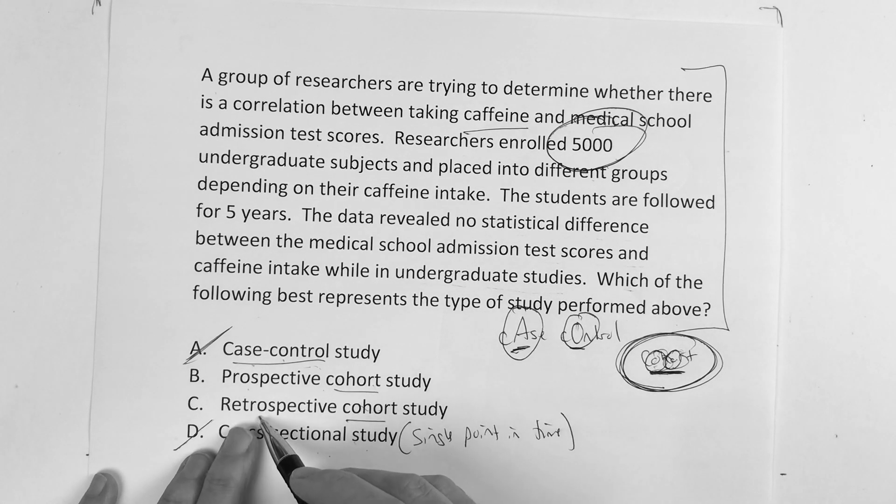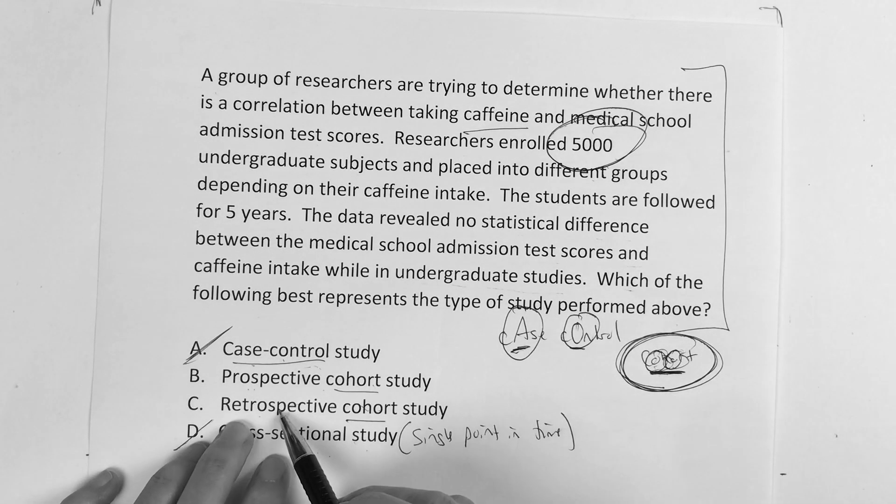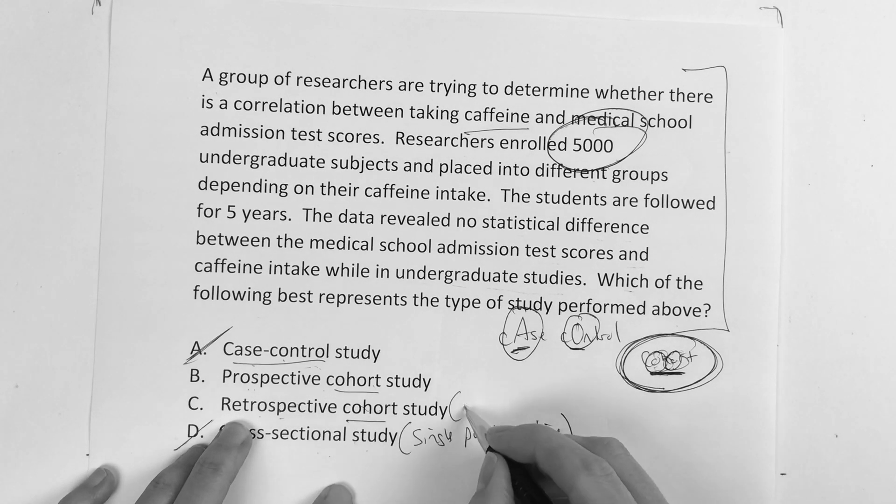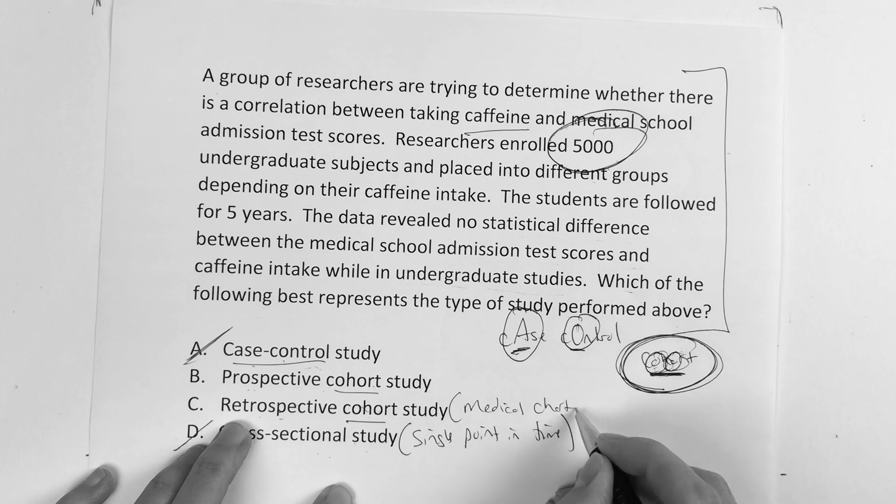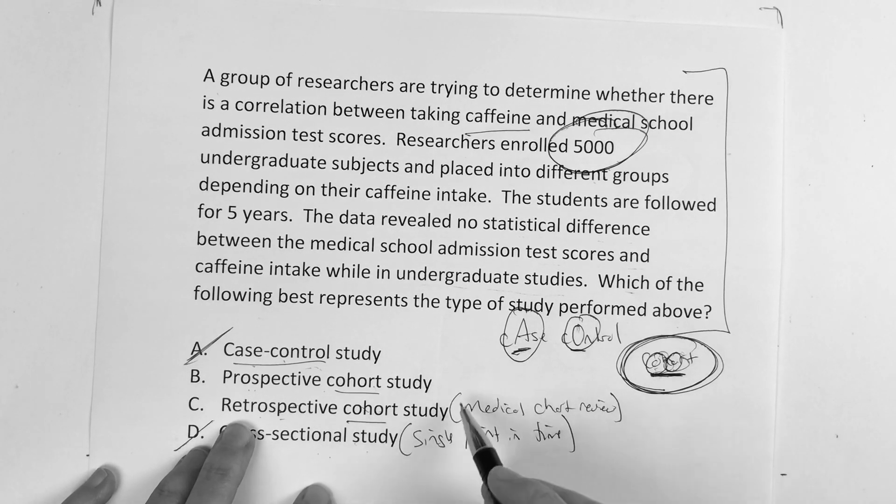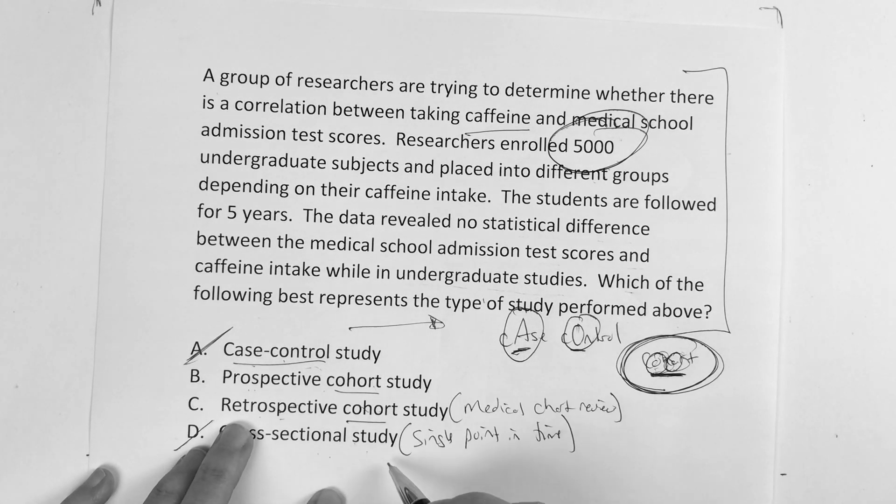Now, is it a prospective or retrospective? Prospective means looking forward. Retrospective means you're looking backwards, and a retrospective is more like a medical chart review - you're looking back at stuff. And this study is not looking backwards. This one's actually looking forward.